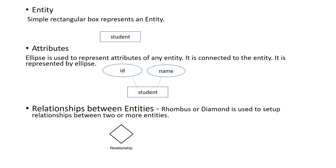Entity is a thing or an object — we use a real-world entity. For example, 'student' — that is an entity. Student is represented by a rectangle box. So entity is represented by a rectangle box.